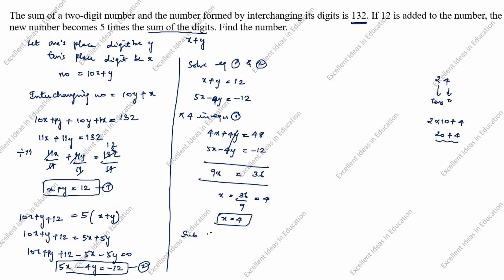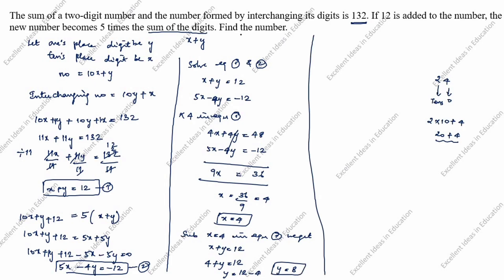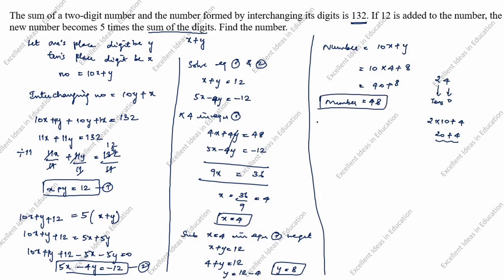Substituting x = 4 into equation 1: 4 + y = 12, so y = 12 - 4 = 8. Therefore the number is 10x + y = 10 × 4 + 8 = 40 + 8 = 48. The number is 48. But we need to recheck.